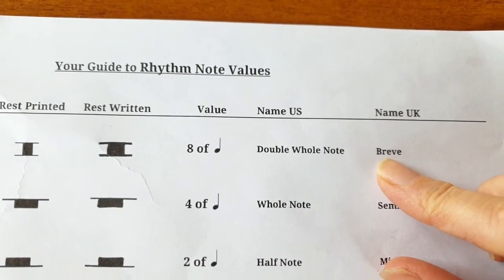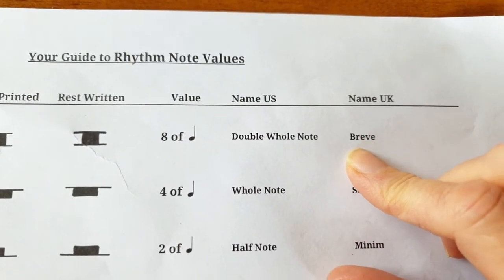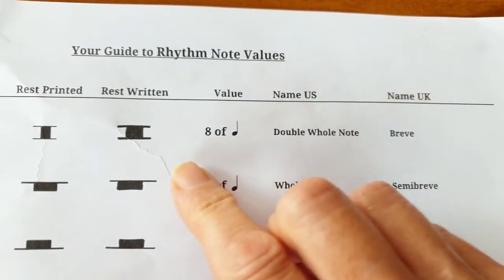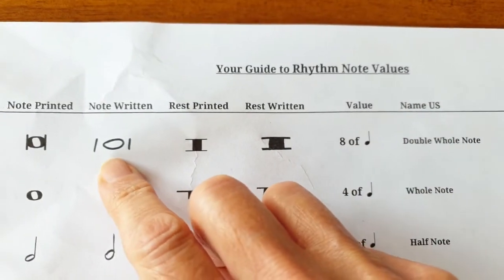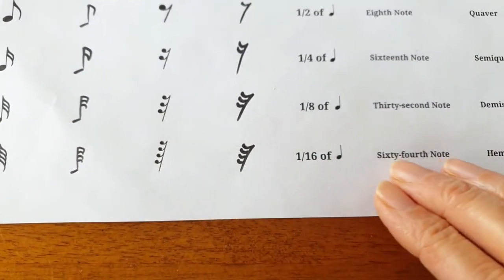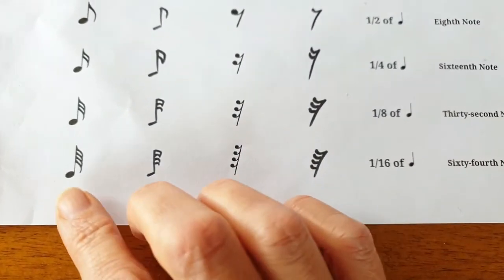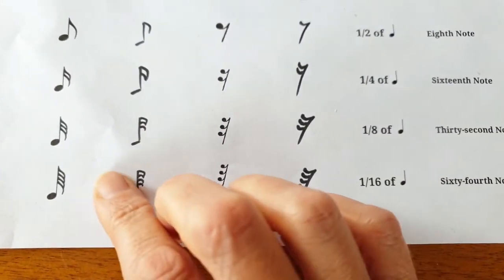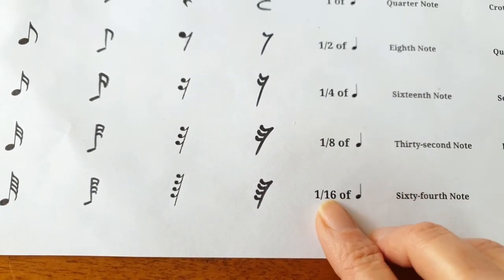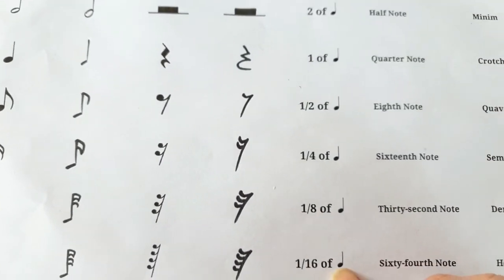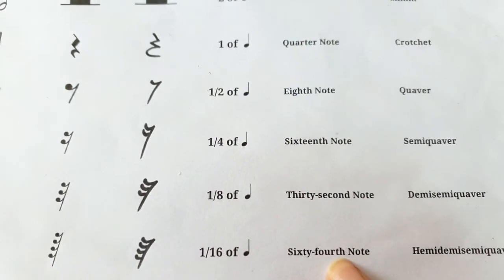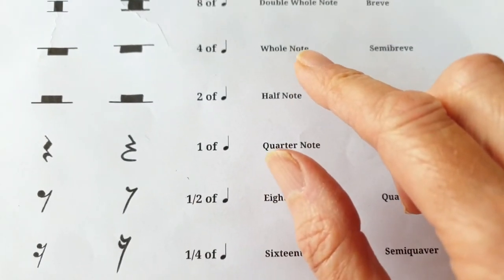For instance, 'breve' means 'short,' but it's the longest note value we use today. Back before the beginning of the 17th century the breve was one of the shortest note values, but during standardization after 1600 it became the longest. Something I find confusing is the 64th note, which is the shortest note value — it has four tails on both the note and the rest, and it's 1/16th of the reference note, the quarter note, but it's called a 64th note because it's 1/64th of the whole note.